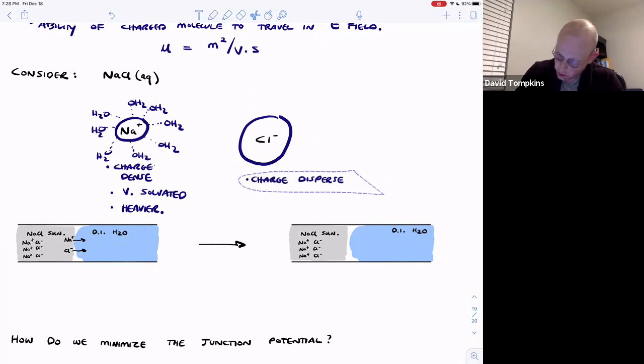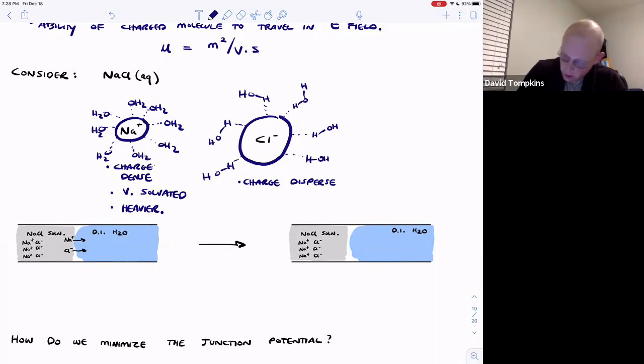So chloride is more charge dispersed, which means actually it will attract a smaller number of these water molecules where chloride bonds or has an ion dipole type interaction with the proton of water, the positively charged end. So there are fewer water molecules. Let me exaggerate that and delete a couple of these. So it's still solvated but less solvated because it didn't have as much charge per unit volume, so it's lighter.